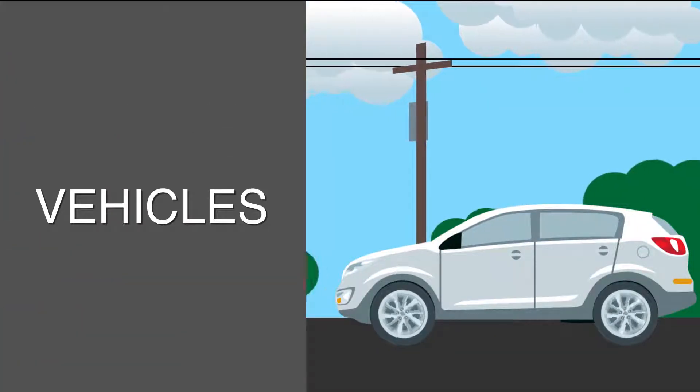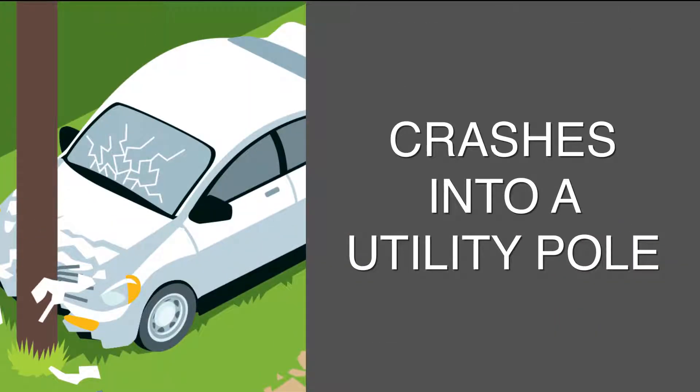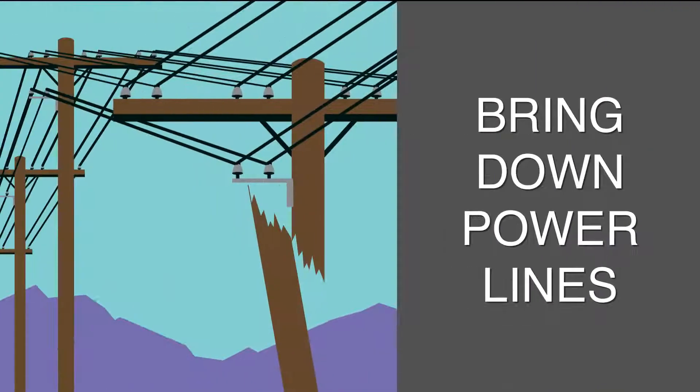Unfortunately, power outages can also occur when vehicles or farm equipment crashes into a utility pole, which can easily bring down power lines and damage other electrical equipment.